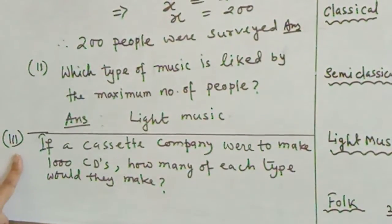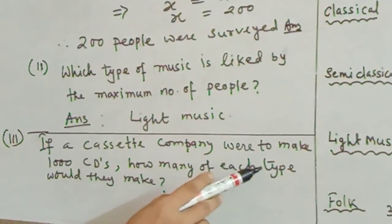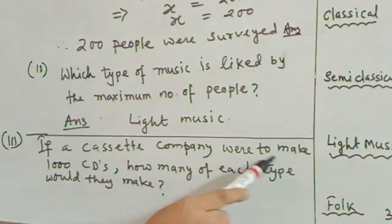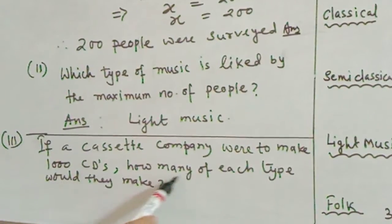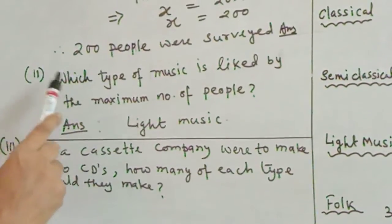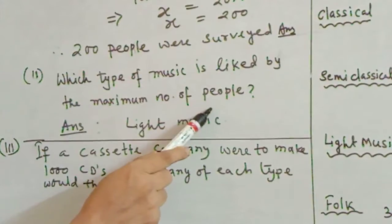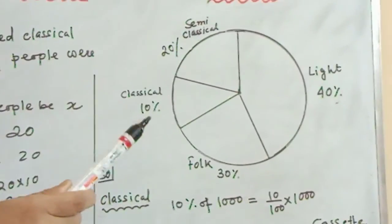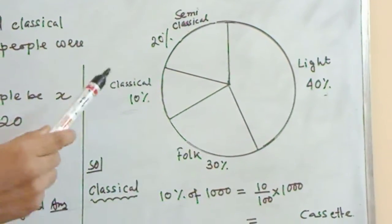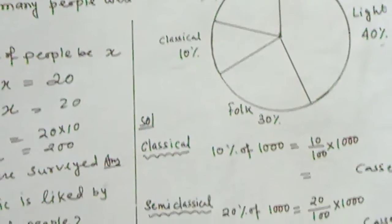Next question: Which type of music is liked by the maximum number of people? By seeing the pie chart, you can see that light music is 40%, remaining 10, 20, and 30. This is the maximum percentage in light music. So you have to write light music.